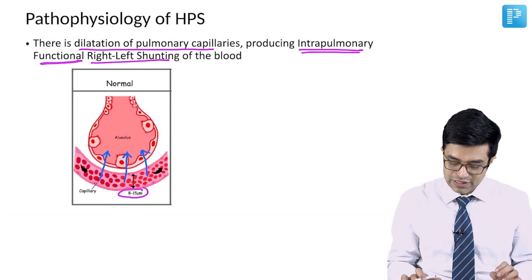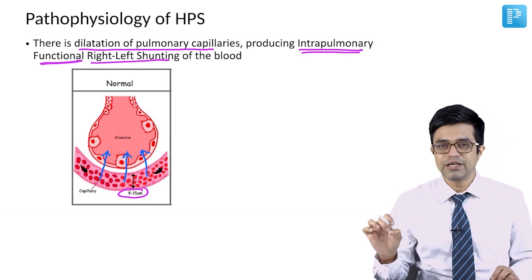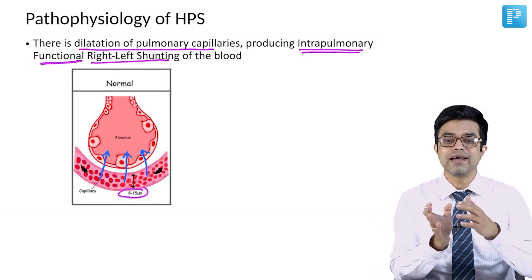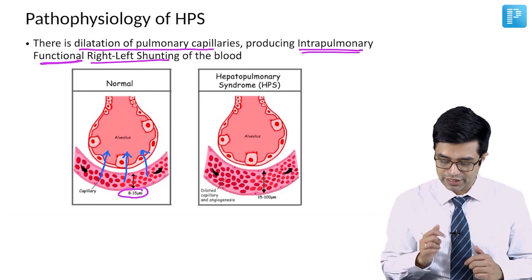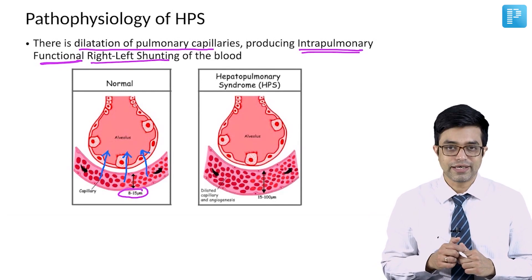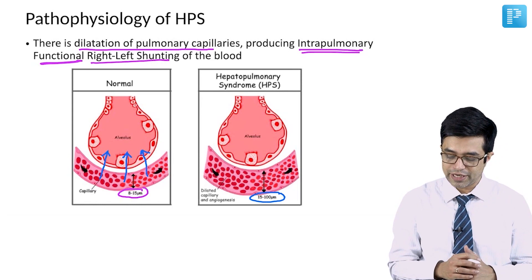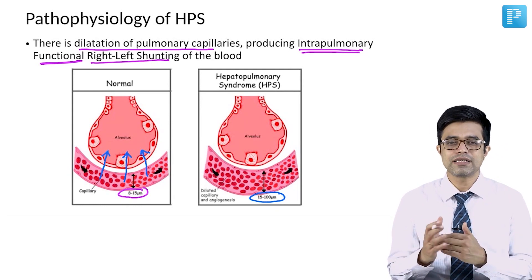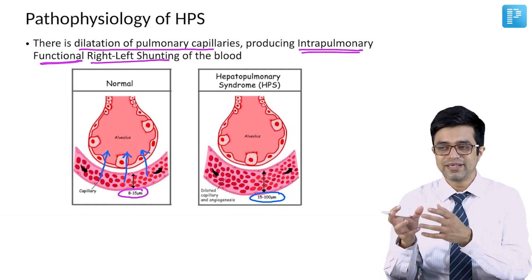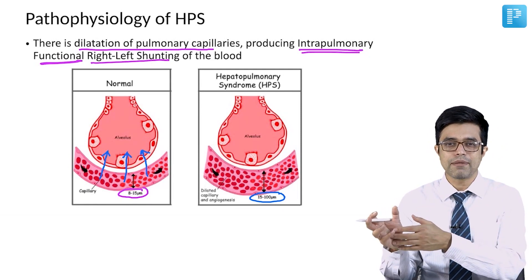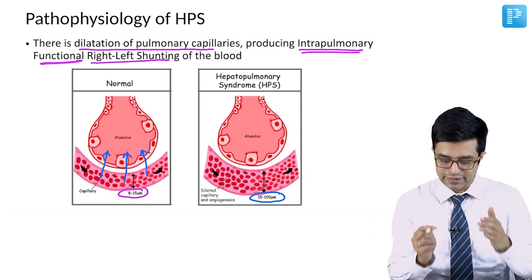What happens in hepatopulmonary syndrome is that due to chronic liver disease, there is dilatation of these pulmonary capillaries and they become thick. The diameter becomes as high as 15 to 100 micrometers. It may sometimes be associated with minor angiogenesis or new thickened capillary formation as well. However, it is mainly the dilatation — the diameter has increased.